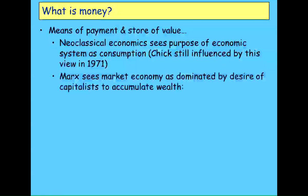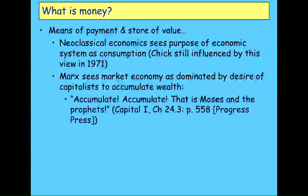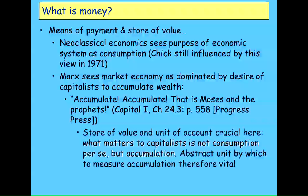The other extreme — the endogenous money end of the spectrum — Marx gave the best expression: yes, you've got to have consumption for capitalism to work, but that's not what drives capitalism. What really drives it is the desire of capitalists to accumulate wealth. He puts this in one of his classical dramatic lines in Volume 1 of Capital: 'Accumulate, accumulate — that is Moses and the prophets.' In that case the store of value side, which is hard to explain in the neoclassical model, is vital, because what matters to capitalists is not consumption but the abstract amount of money they accumulate.